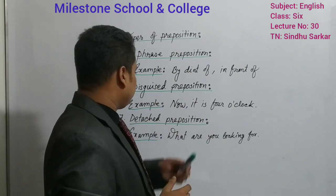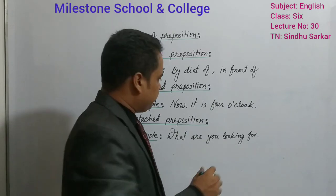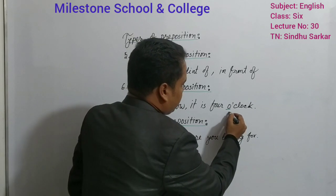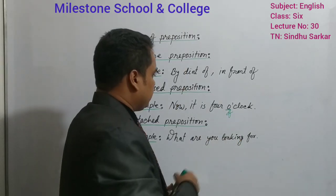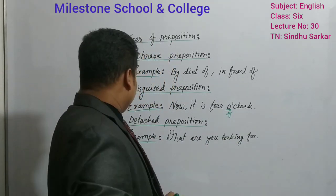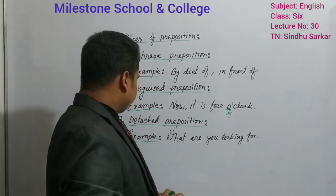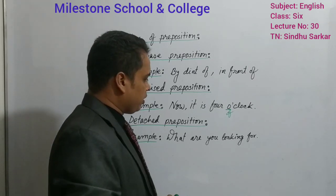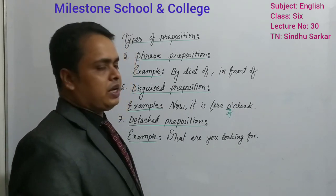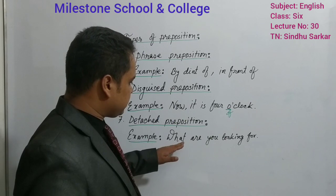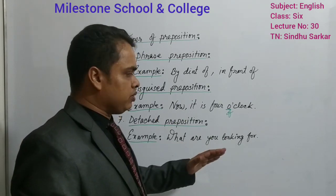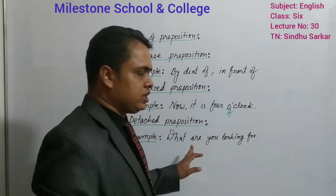Then, disguised preposition. 'Now it is 4 o'clock.' Here you are getting 'o' — this 'o' stands for 'of.' This 'o' is considered as disguised preposition. Now, detached preposition. Example: 'What are you looking for?' In case of detached preposition, you are getting the preposition at the end of the sentence. Without 'for,' this sentence is not meaningful.